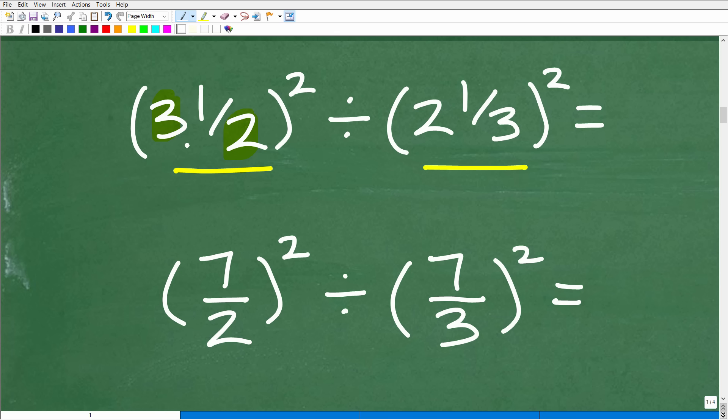So 3 and 1/2 we're going to change to an improper fraction: 2 times 3 is 6 plus 1, so that's 7 over 2. And we're going to do the same thing here. 2 and 1/3, that's 3 times 2 is 6 plus 1, that's going to be 7/3. So now we have the problem expressed with improper fractions. This is going to make this problem much easier to do.